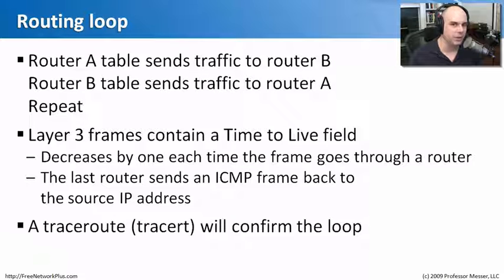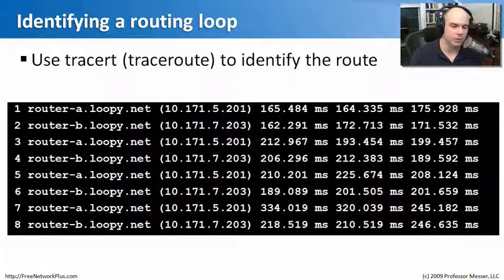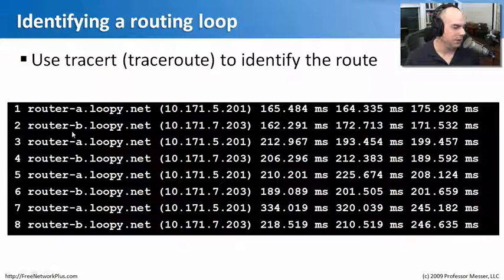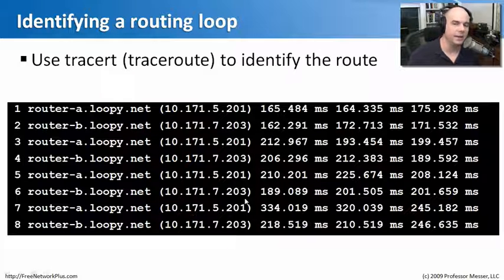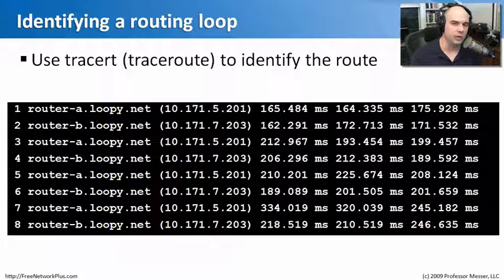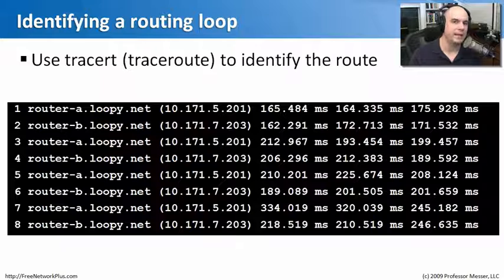If you do a traceroute, you'll see the loop clearly — going to one router, then another, then back to the original, over and over. A good way to confirm this is to run a traceroute to the destination IP address and watch the hops repeat between router A and router B. What you'll want to do is talk to the person in charge of configuring your routers, let them know you've got a routing loop, provide the source and destination IP addresses, and they can step through the routing tables to fix it.